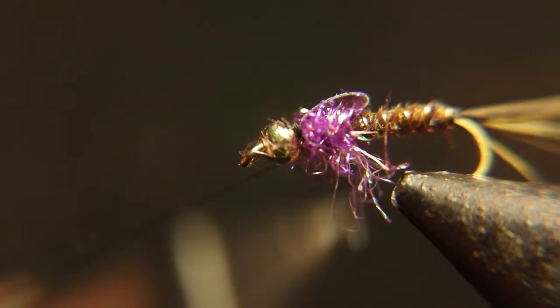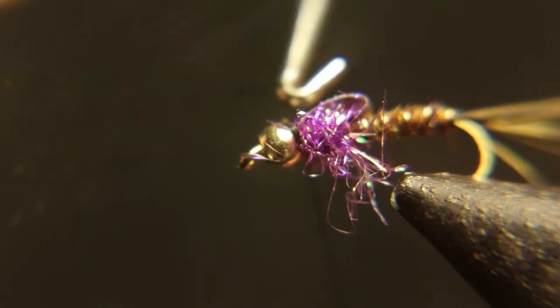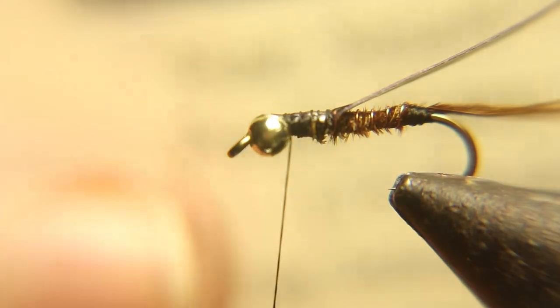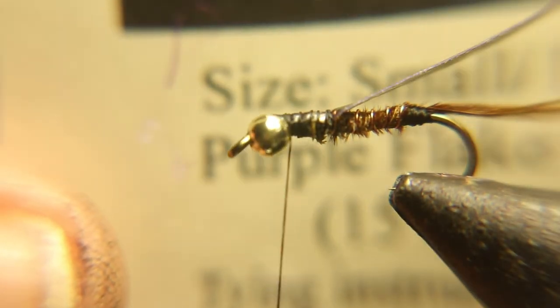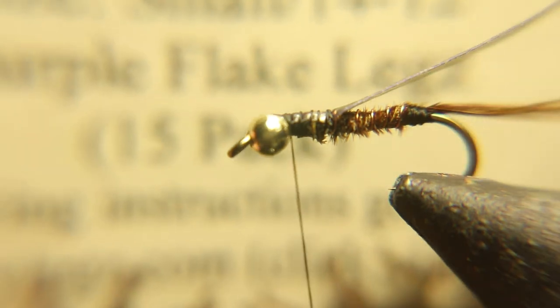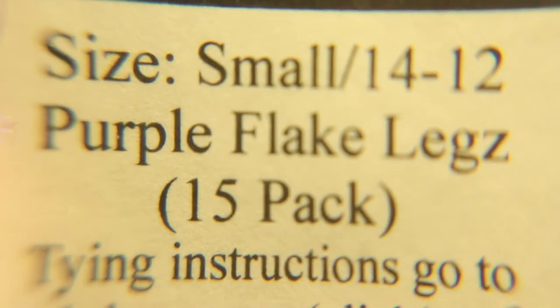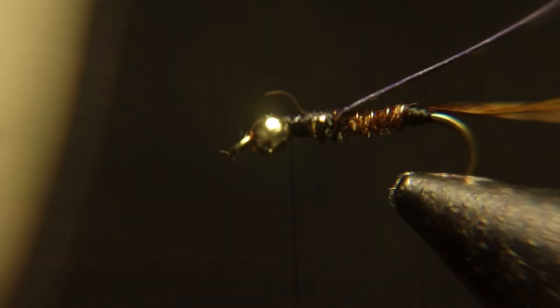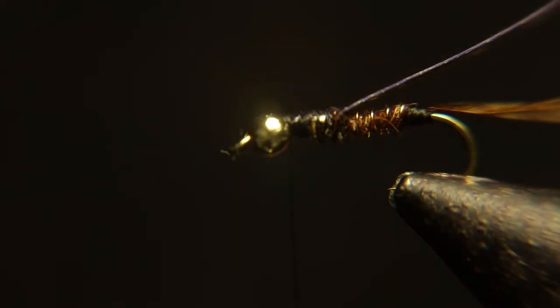Now we're going to use these purple small purple flakes. They are made—if you go to the lively legs website, which I'll put the link down below—they are made for the flashback pheasant tail nymphs, which we are tying.